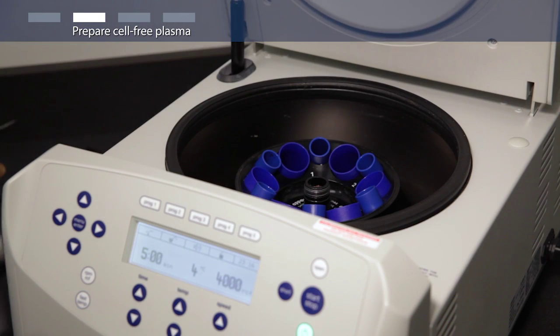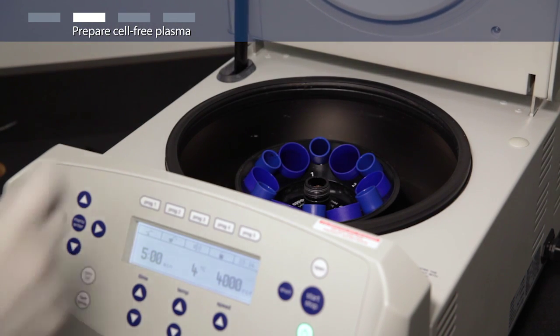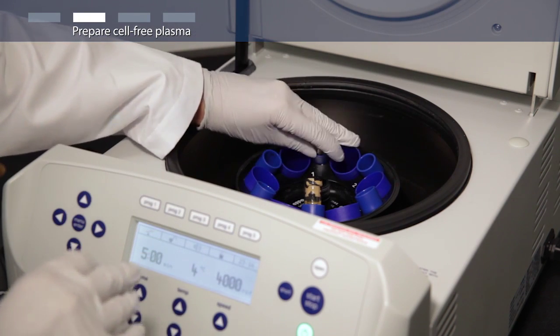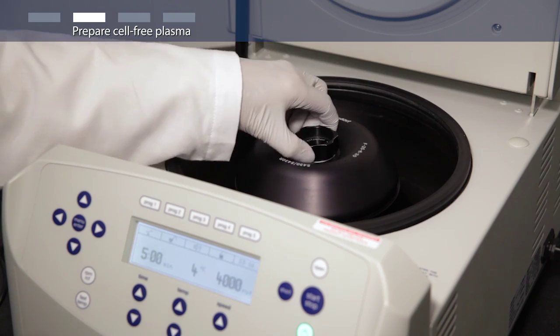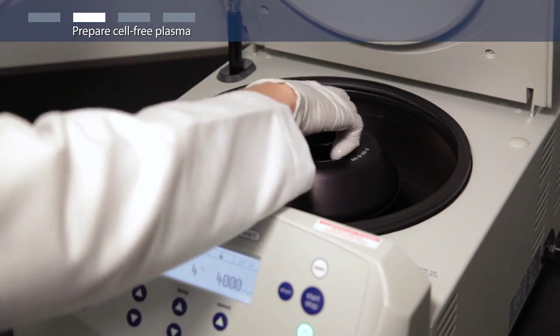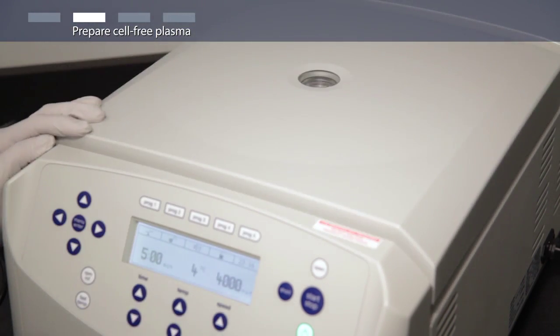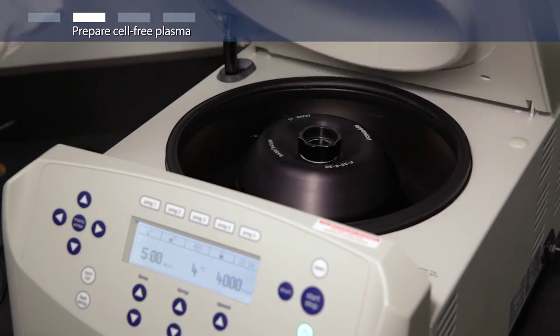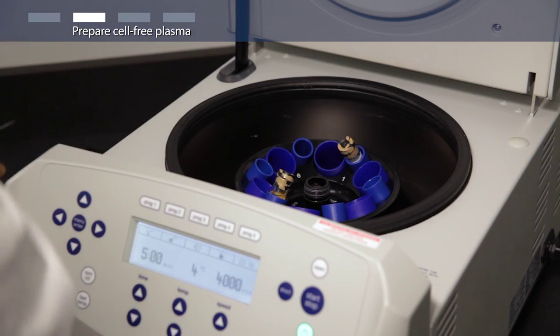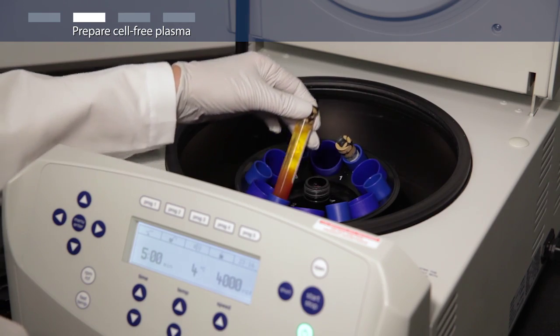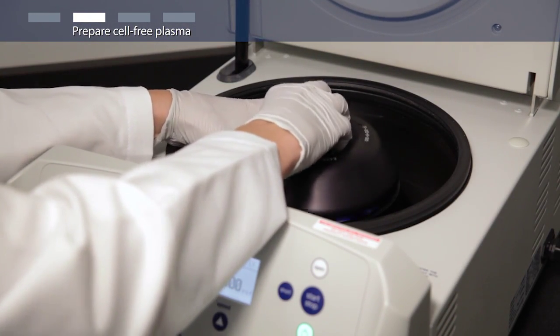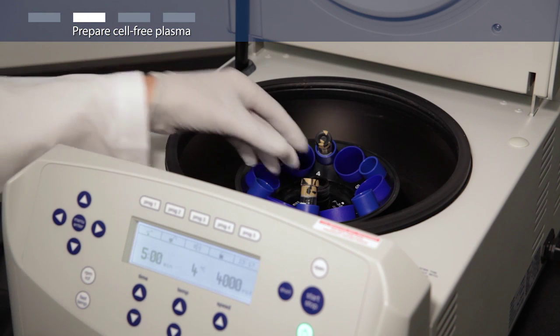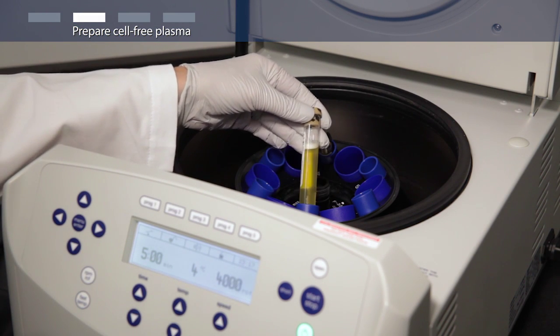First, separate the cells from the plasma sample. Centrifuge the blood collection tube at 2000G for 10 minutes and transfer the plasma to a fresh tube. Centrifuge again at 16000G for 10 minutes and transfer the cleared plasma to a fresh tube.